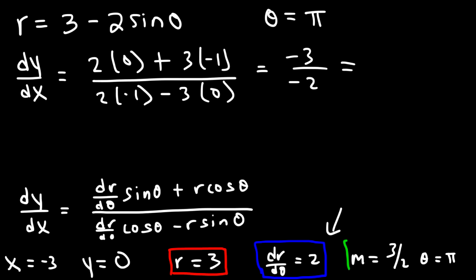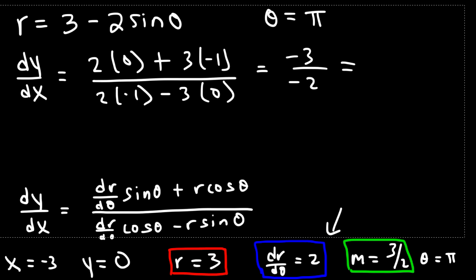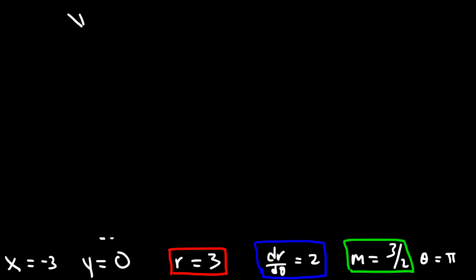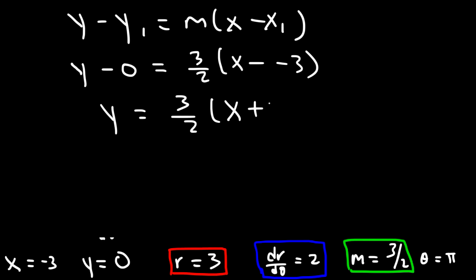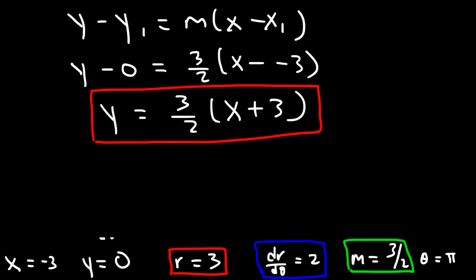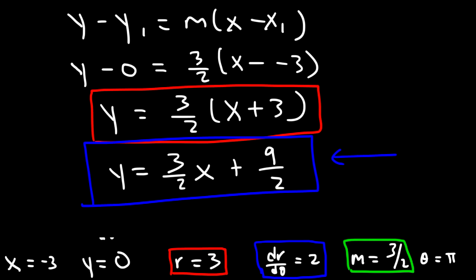Now that we have everything, we can determine the equation of the tangent line. Using point-slope form with point (−3, 0) and slope 3/2: y − 0 = (3/2)(x − (−3)), which simplifies to y = (3/2)(x + 3). Distributing: y = (3/2)x + 9/2. That's the equation of the tangent line in slope-intercept form.